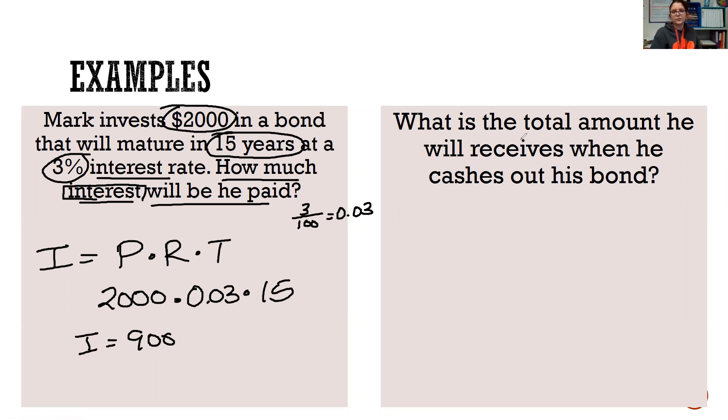So what is the total amount he will receive when he cashes out his bond? So total is interest plus principal or principal plus interest. So our interest is $900. The principal is $2,000. And so the total is $2,900.